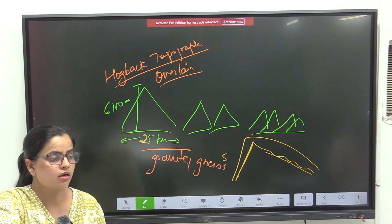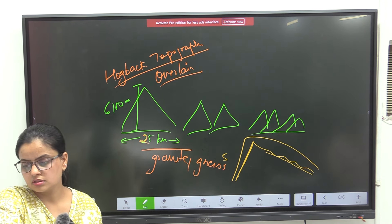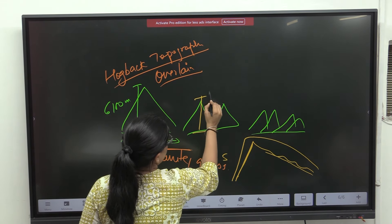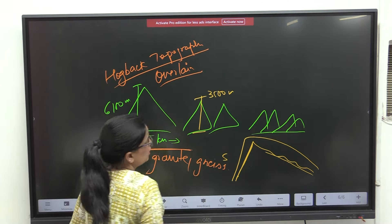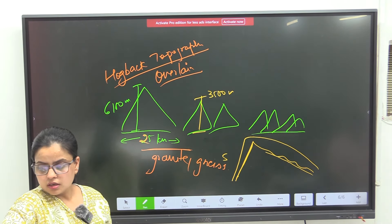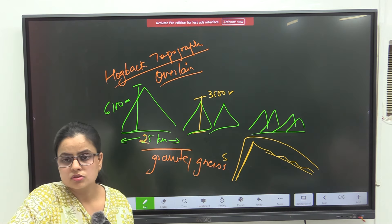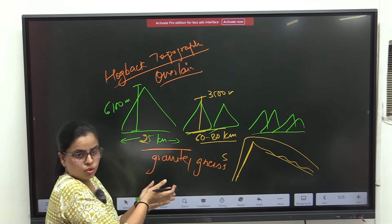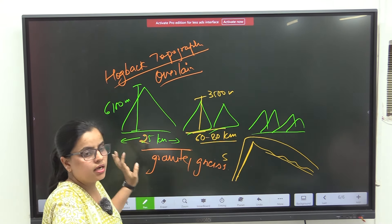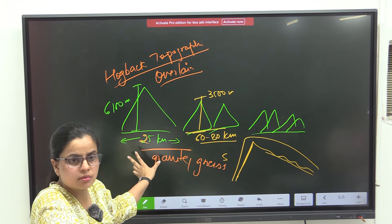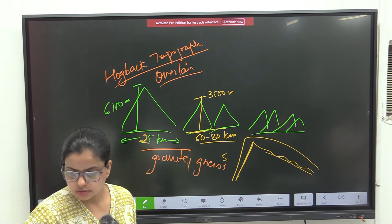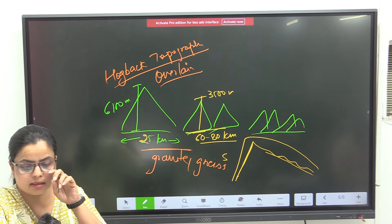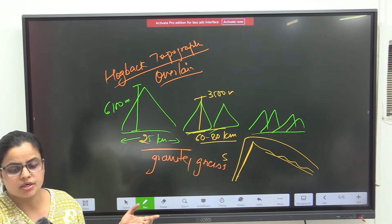Now the Middle or the Lesser Himalayas — Himachal — elevation of around 3500 meters, and 60 to 80 kilometers width. So it is more wider compared to the Greater Himalayas, which is only around 25 to 30 kilometers width. This range is located in between the Shivaliks and the Greater Himalayas.